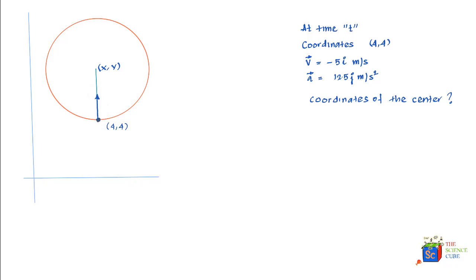the center of this circular motion has to be 4 - only the x-axis of it would be 4.